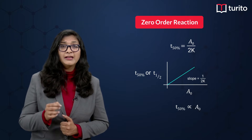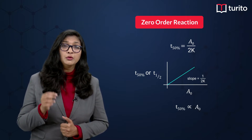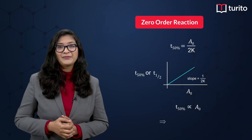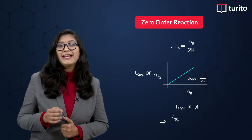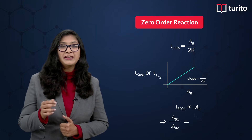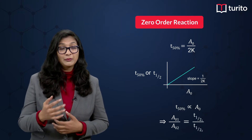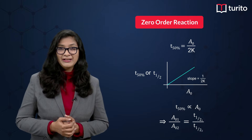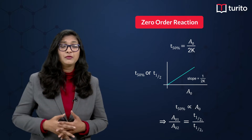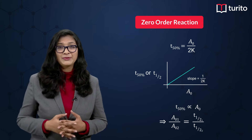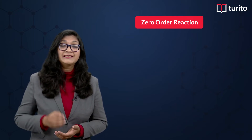From here, t₅₀% is directly proportional to the initial concentration A₀. So A₀₁ divided by A₀₂ will equal t½₁ divided by t½₂ in two different conditions. That means if I change the initial concentration, the t½ value will also change.